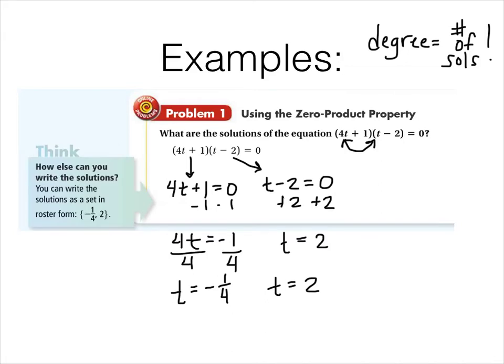How else can you write the solutions? Well, you can write it as a set. And so we write it in what's called roster form, which is with these curly braces here. So just put your squiggly parentheses, the smaller value, then the larger one, and close your squiggly parentheses. As long as they don't look like parentheses parentheses, then we're good.